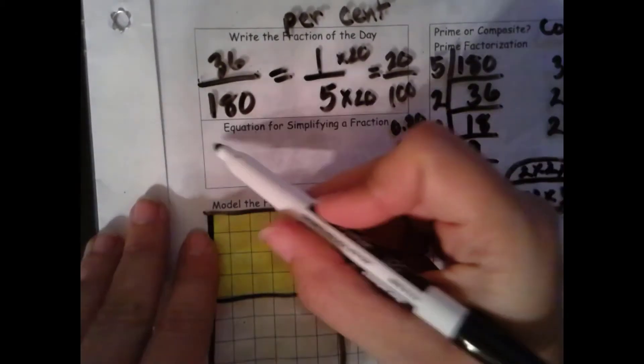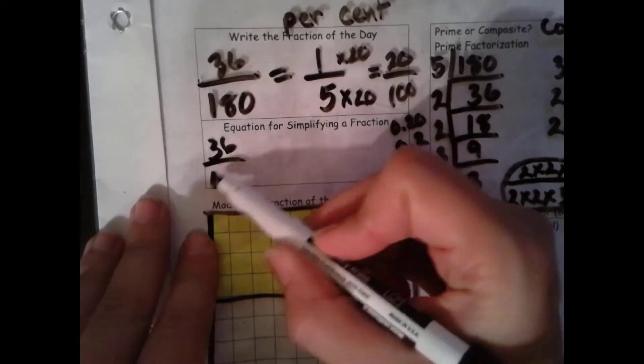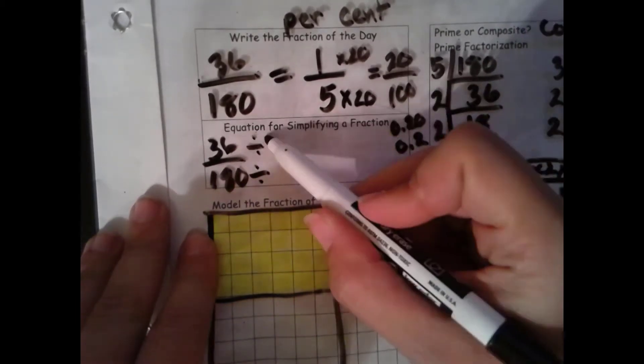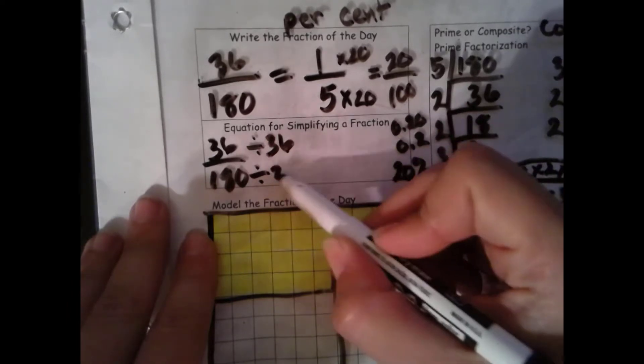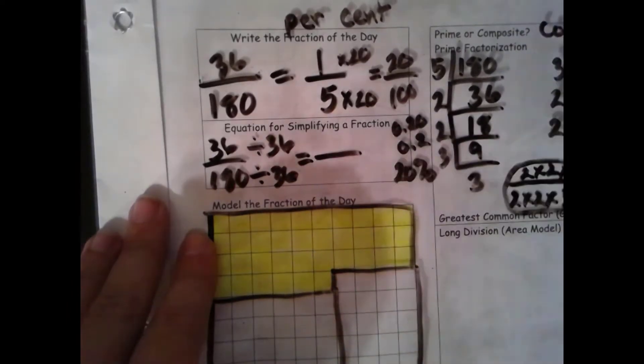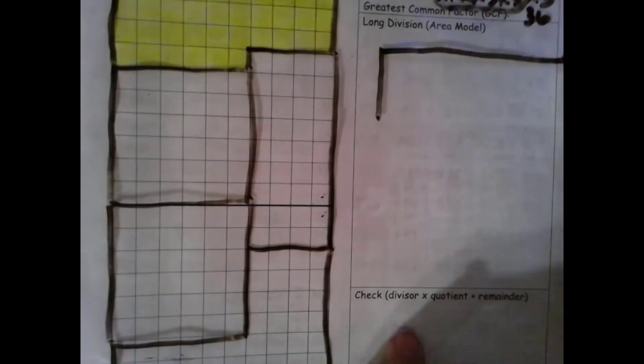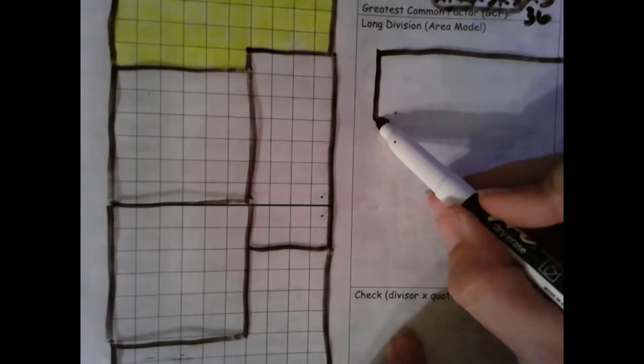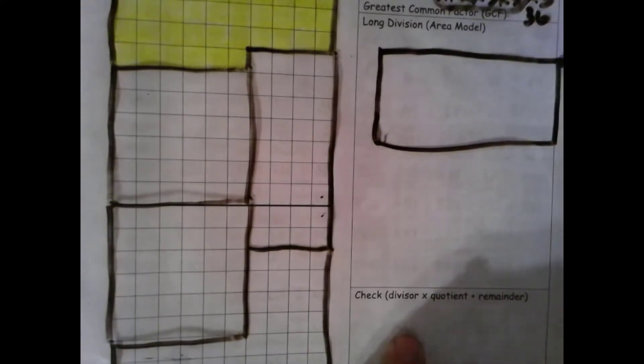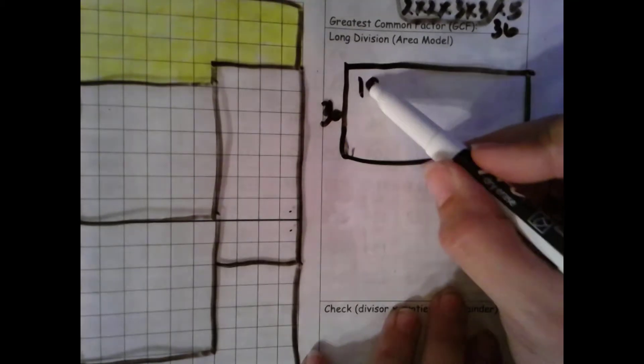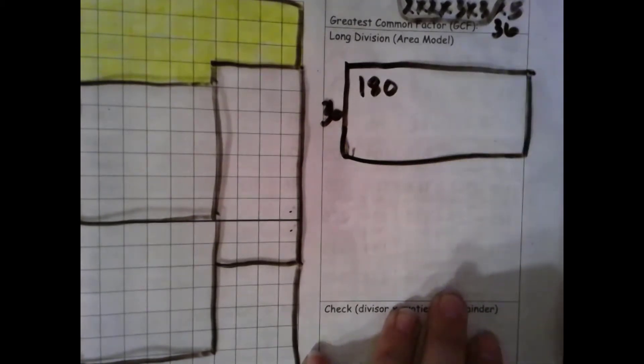Let's go ahead and prove this with our algorithm, since we did it with our model. Let's divide by our greatest common factor. All right, so first. Our denominator. Make our area model. We're dividing by 36.